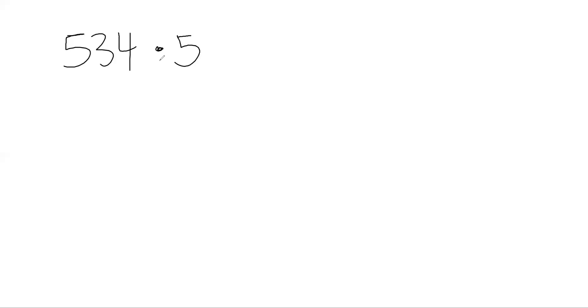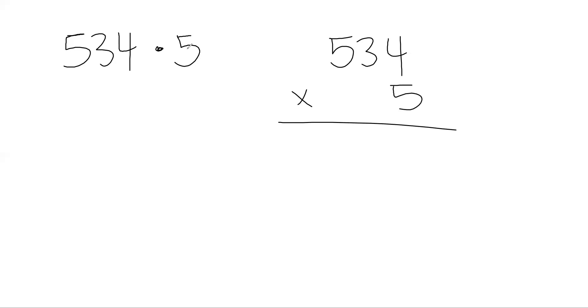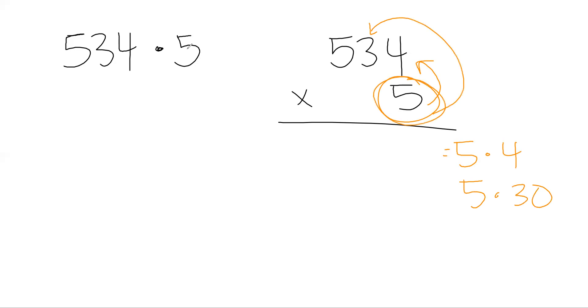Let's say I have a three-digit number: 534, and I'm going to multiply that by 5. Same process — we stack it. Then I think about ones times ones: 5 times 4. Then ones times tens: 5 times 30. Then ones times hundreds: 5 times 500.